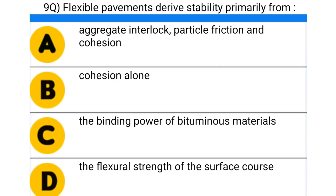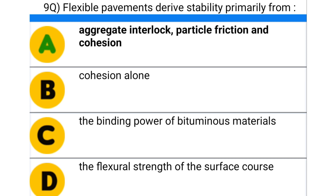Next question: flexible pavements derive stability primarily from — option A: aggregate interlocked particle friction and cohesion, option B: cohesion alone, option C: the binding power of the bituminous material, option D: the flexural strength of the surface course. The correct answer is option A: aggregate interlocked particle friction and cohesion.